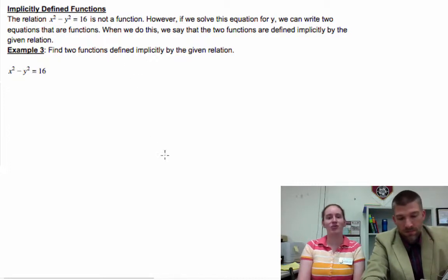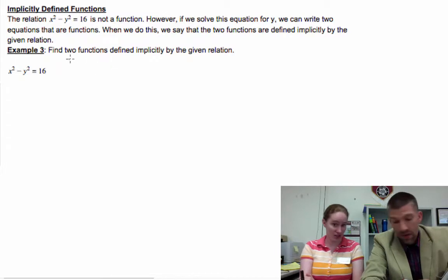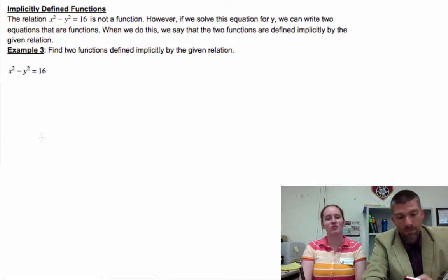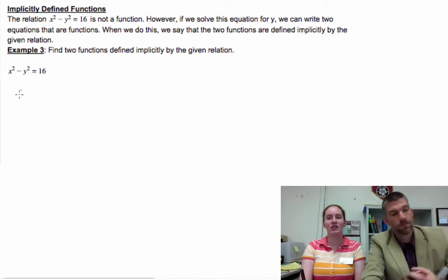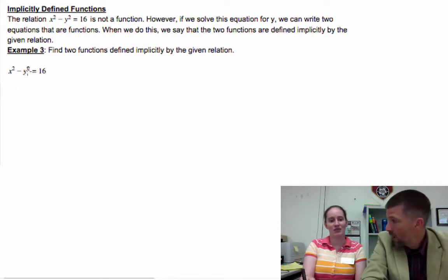However, if we solve this equation for Y, we can write two equations. That's correct. And when we do this, we say that the two functions are defined implicitly by the given relation.